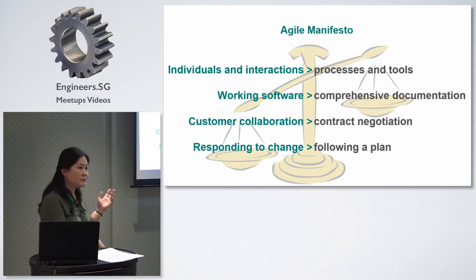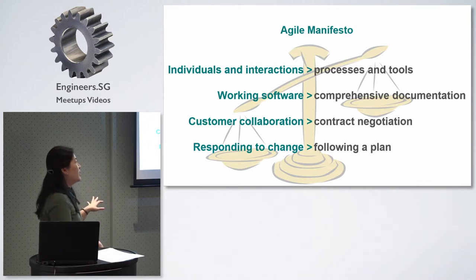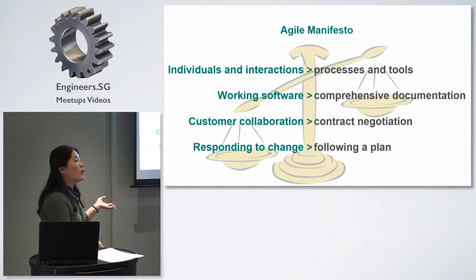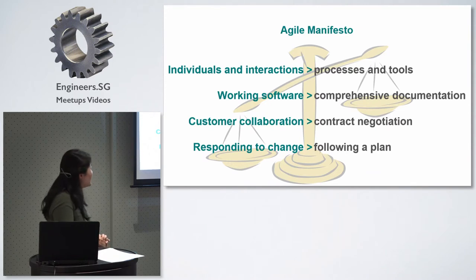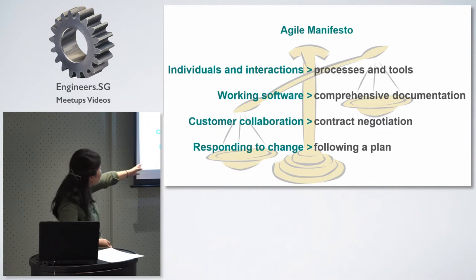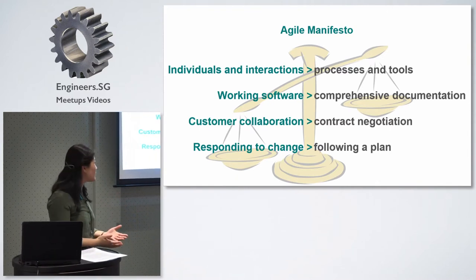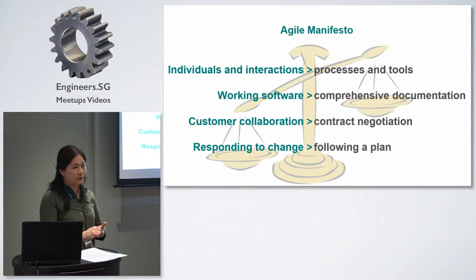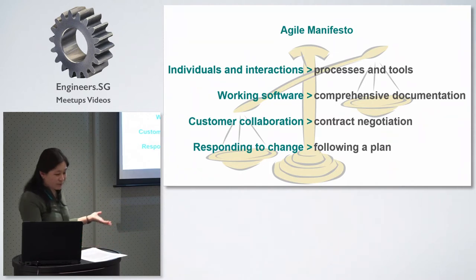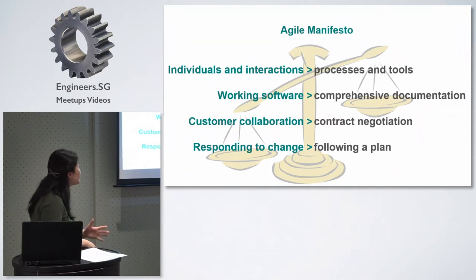This is the Agile Manifesto — the core of all the different software methodologies we have today. Processes and tools are important; we know these are the building blocks of all software projects. Without process and tools, we can't really view the whole project clearly. Comprehensive documentation is definitely very important — it's our main form of communication about what the software does.